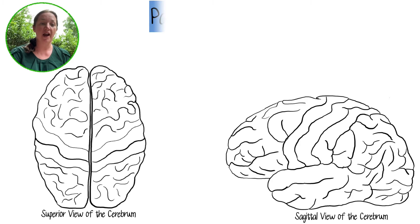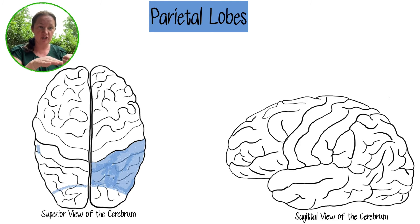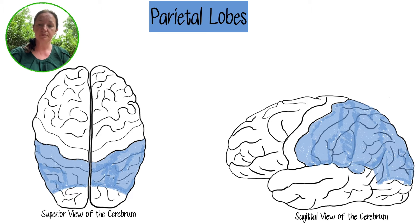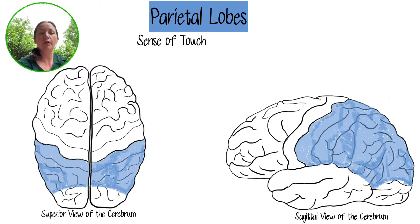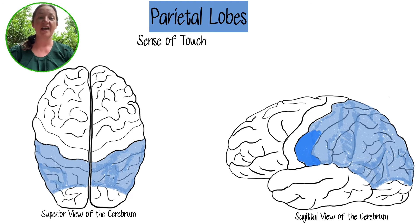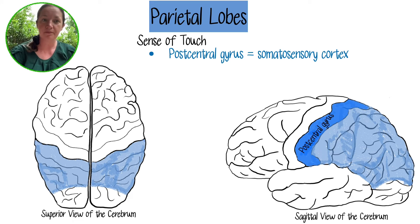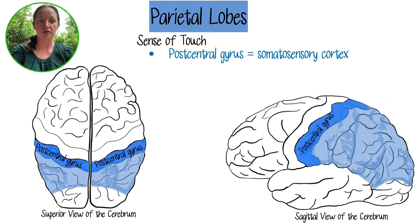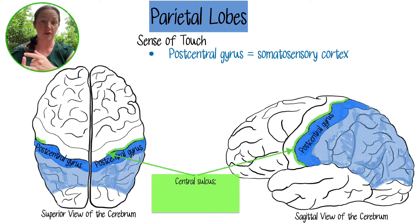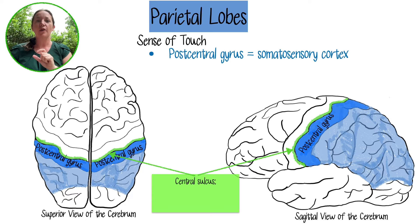Now the parietal lobes. You can see them in both the superior view and from the side. They are responsible for processing your sense of touch. Specifically, neurons in the postcentral gyrus form your somatosensory cortex, and that's how you process your sense of touch from all over your body. So the frontal lobe has the precentral gyrus — the primary motor cortex — and the parietal lobes have the postcentral gyrus, which is the somatosensory cortex for processing your sense of touch.